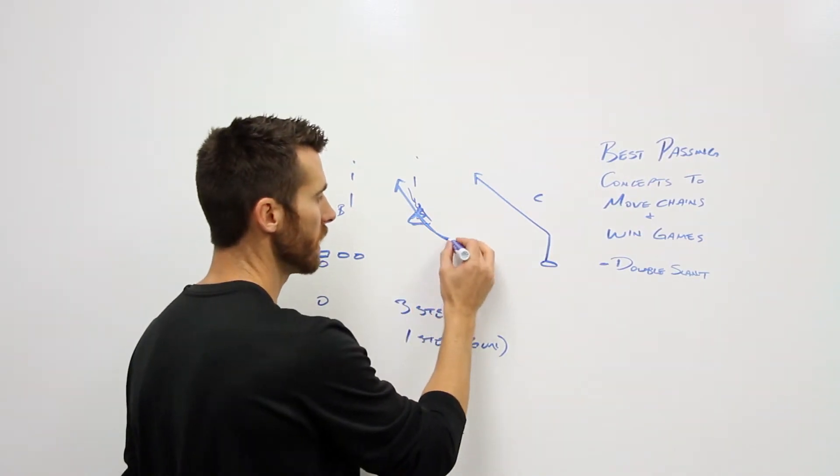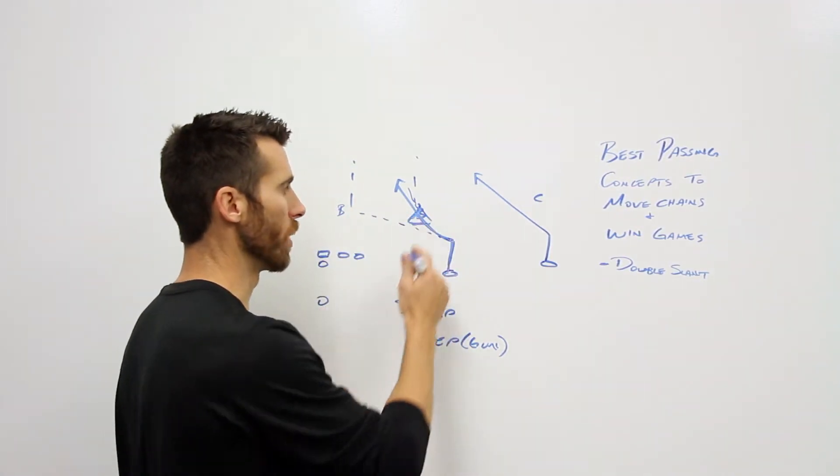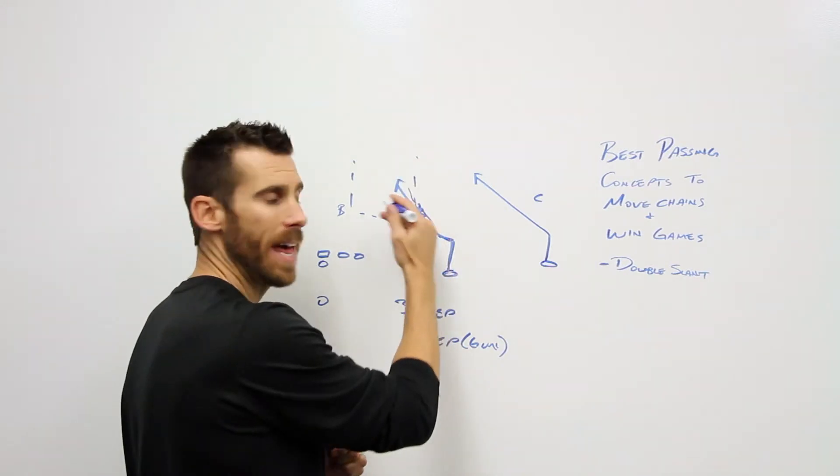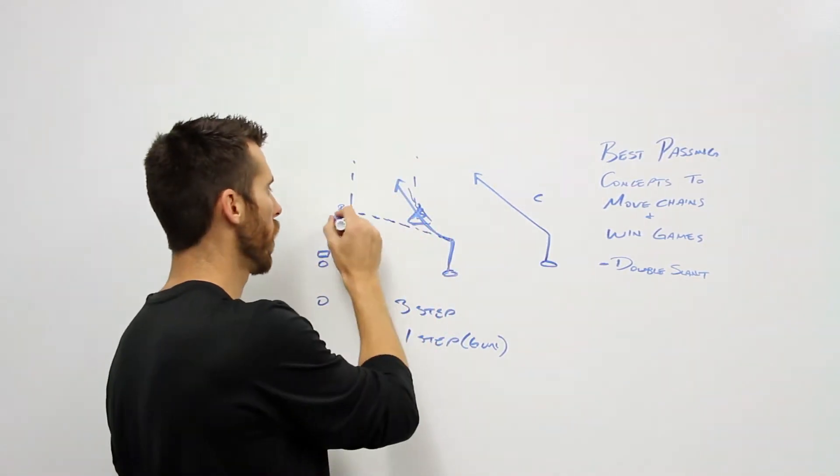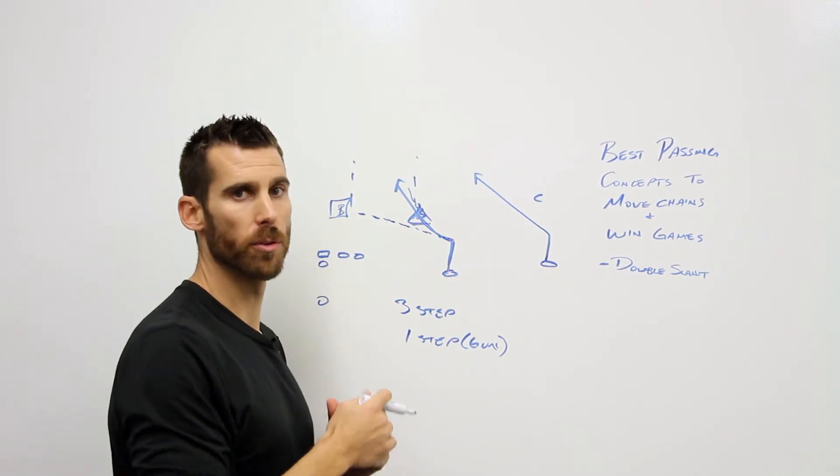Some coaching points. Problem I see is when we run this slant too flat or we let this defender flatten us and push us down into the problem. The problem is this inside, the number 3 defender.